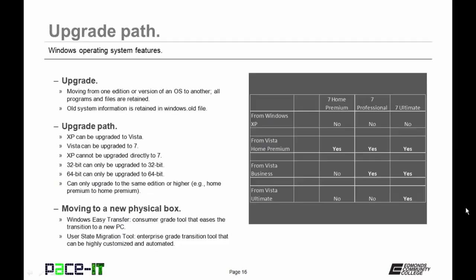Now let's talk about the upgrade path. An upgrade is moving from one edition or version of an operating system to another, and all programs and files are retained. The old system information is retained in a Windows file called Windows.old. XP can be upgraded to Vista, and Vista can be upgraded to 7, but XP cannot be upgraded directly to Windows 7. If you're running 32-bit, you can only upgrade to 32-bit, and vice versa.